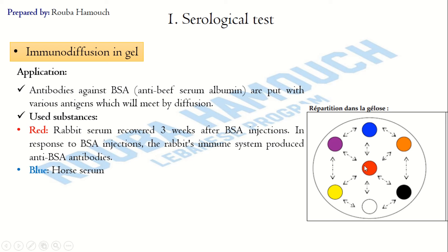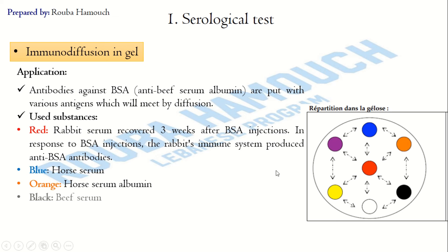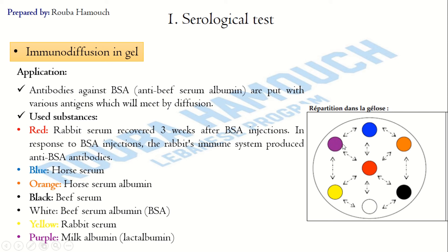In the blue well we put the whole horse serum; in orange, only the horse serum albumin; in black, the whole beef serum; in white, the beef serum albumin; in yellow, the whole rabbit serum; and in the purple well, the albumin of milk. So we have different antigens — albumin of horse, beef, and milk — and different sera from horse, beef, and rabbit.